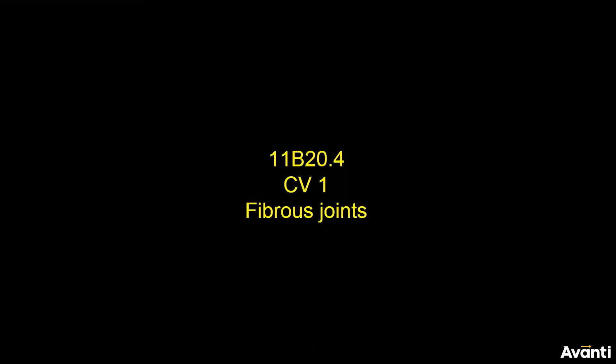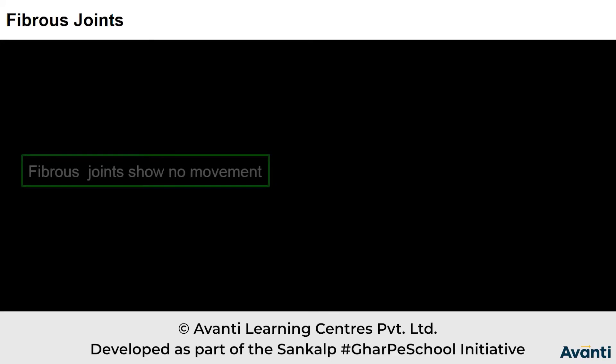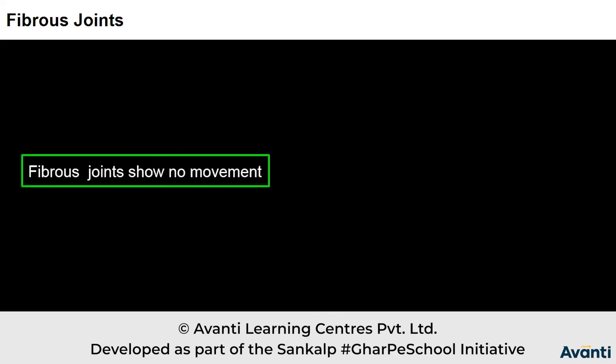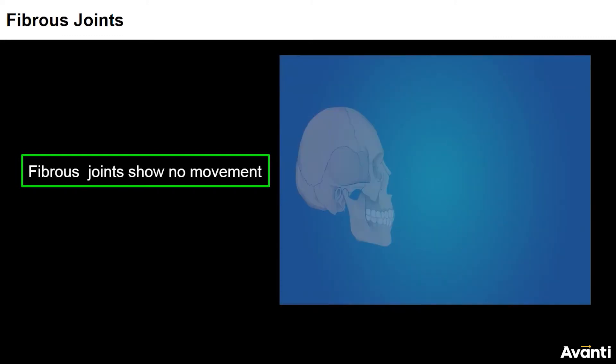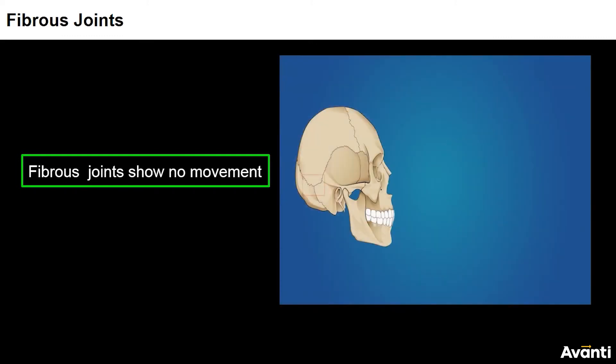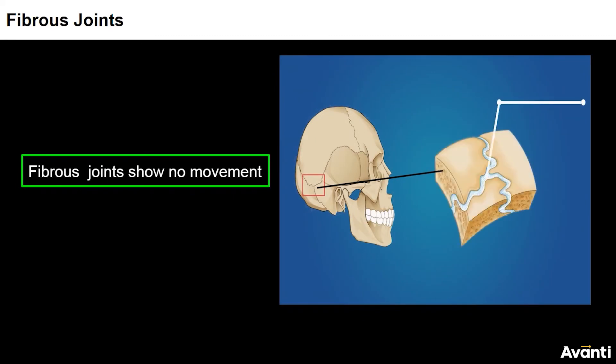Joints are of different types. The first type is fibrous joints. Fibrous joints do not allow any movement. An example of this type of joint is in our cranium, where cranial bones are fused end to end with the help of dense fibrous connective tissue.